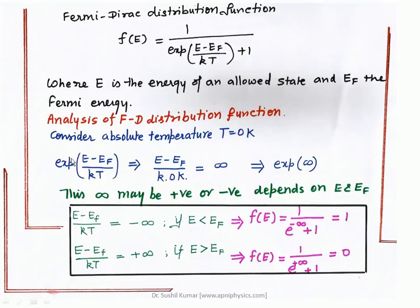In the second case, when the energy of the level is above the Fermi energy level, then (E − EF) / kT = +∞. The result of F(E) = 0 — there is no chance of an electron in that particular energy state. The probability distribution is zero. This is true when temperature is zero Kelvin — all energy states are either completely filled or completely empty.